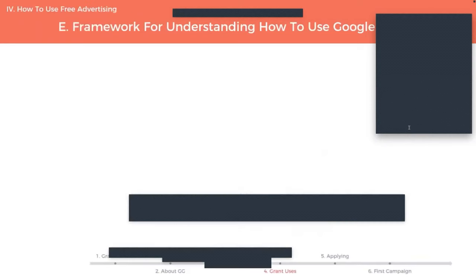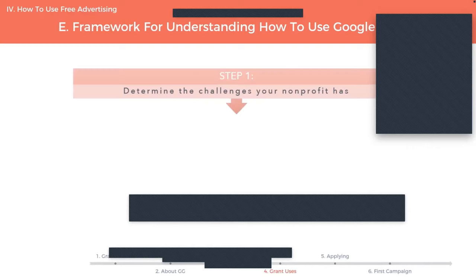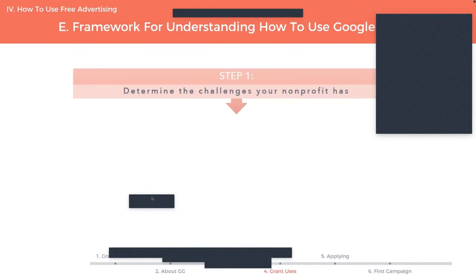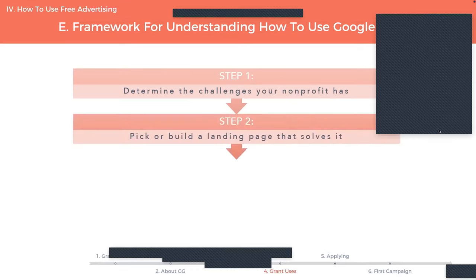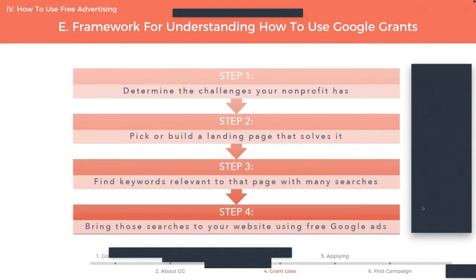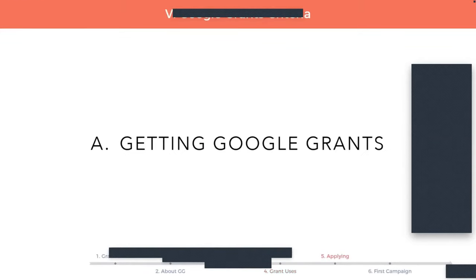A handy framework for understanding how to use the Google Grants in the context of your nonprofit: one, determine the problem or challenge that your nonprofit has and wants to solve — increasing event attendance, getting donations, or growing your email list. Two, choose a landing page or build a webpage that solves that issue. Three, go to Google's Keyword Planner and find keywords that are very relevant to that page and have a high search volume. Finally, bring those people who are searching on Google to your website using Google's free ads. Now I'm going to hand it over to Simon to explain how you can get your Google grant.